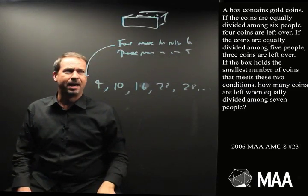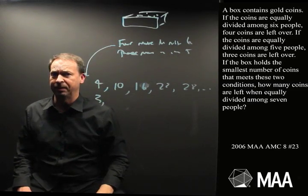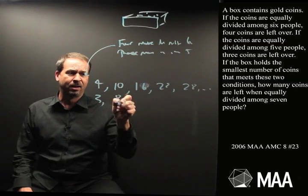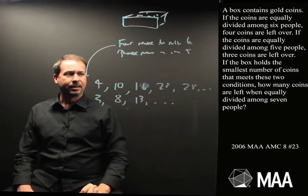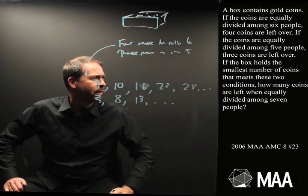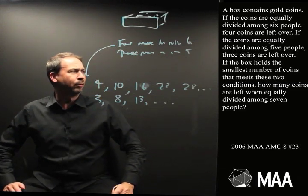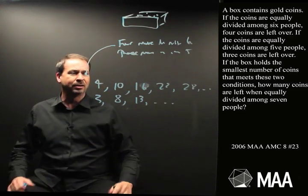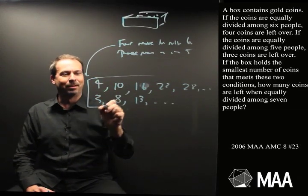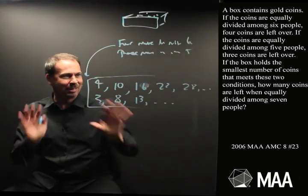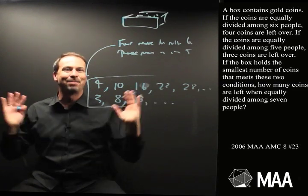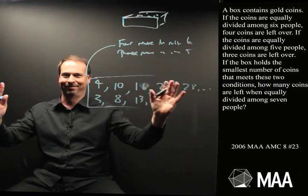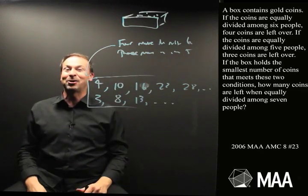Three more than a multiple of five. So it could be three, three more than zero, or three more than five, or three more than ten, and so on. If the box holds the smallest number of coins possible that meets these two conditions, I just need to find a number common to those two lists. Just keep going until I see a number in common. The first common one is the number of coins. Bingo. Everything would fall into place. That seems doable. In fact, I invite you to do that.